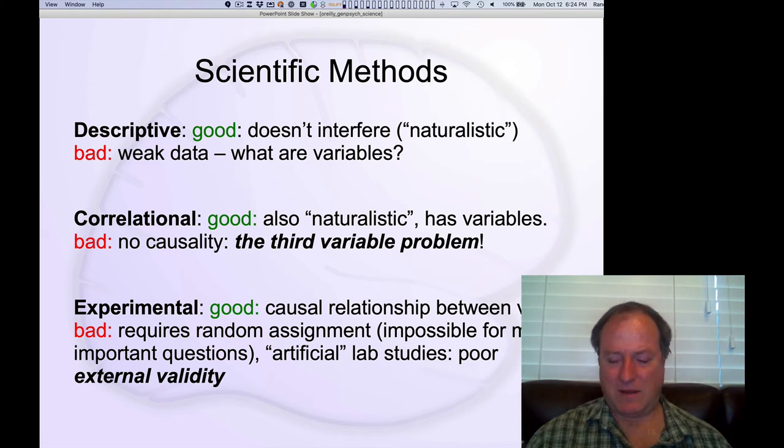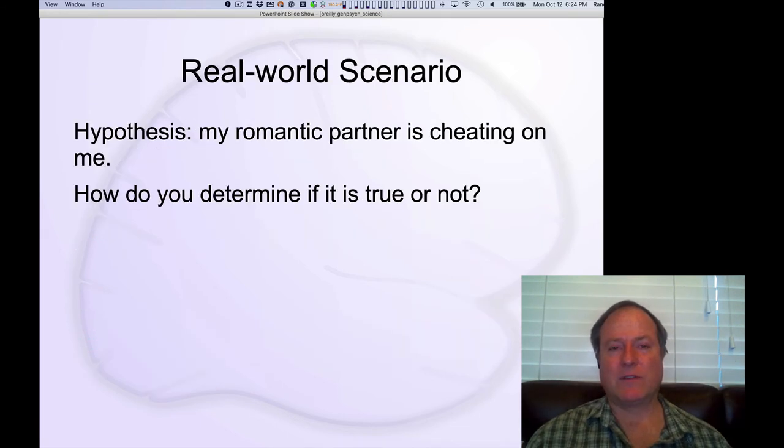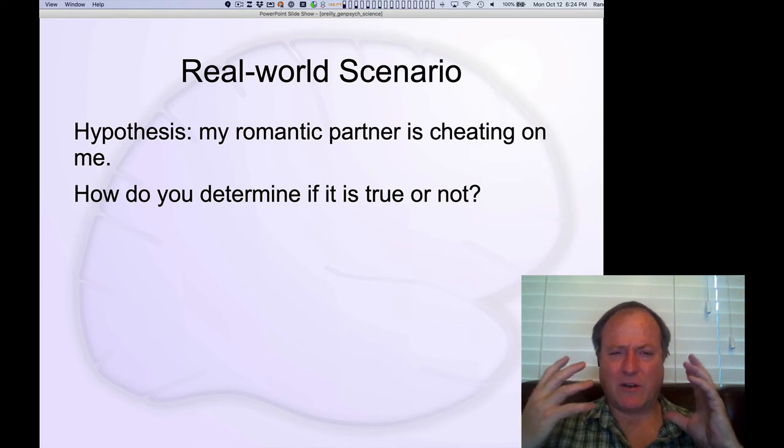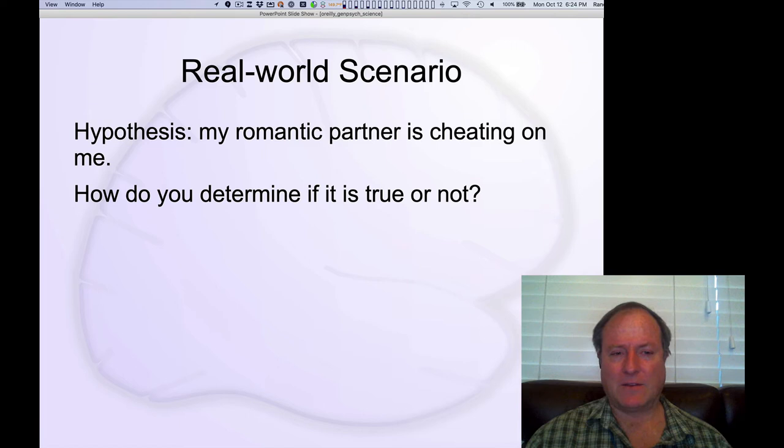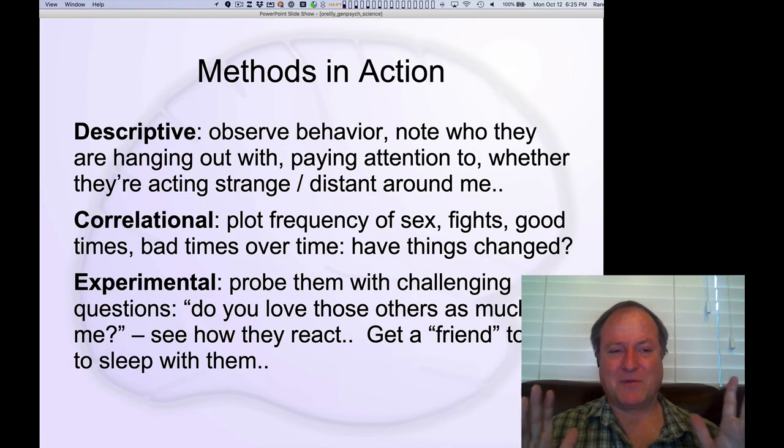Okay, so let's work through some of these details in the context of a real world scenario so we can understand how these trade-offs might operate. This is kind of an artificial case here. There's some weird things about it, but it kind of captures the interest and hopefully generates some real world intuitions. So the hypothesis is my romantic partner is cheating on me. How do you determine if that is true or not? And one of the limitations of this is it's like a one-off thing. There's no population condition here, so it's kind of a weird thing, hard to look at scientifically. But anyway.